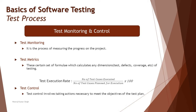Monitoring is the process of measuring and keeping track of ongoing progress on the project activities, including test processes. The matrices tell you where you are right now. One example is the test execution rate — a matrix that calculates how many test cases have been executed compared to the number of planned test cases, multiplied by 100, giving a percentage.